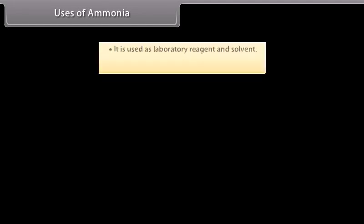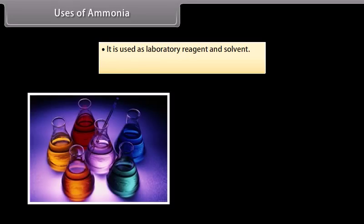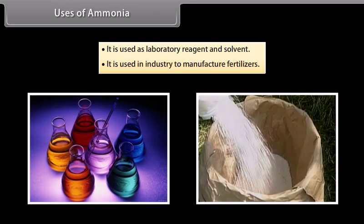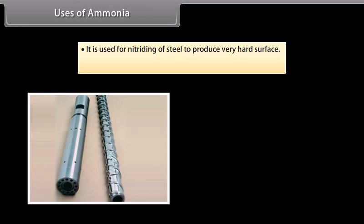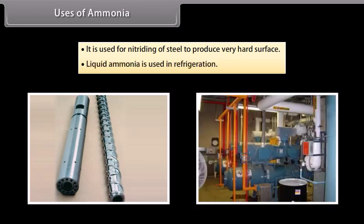The important uses of ammonia include: use as a laboratory reagent and solvent; manufacture of fertilizers in industry; nitriding of steel to produce a very hard surface; and use of liquid ammonia in refrigeration.